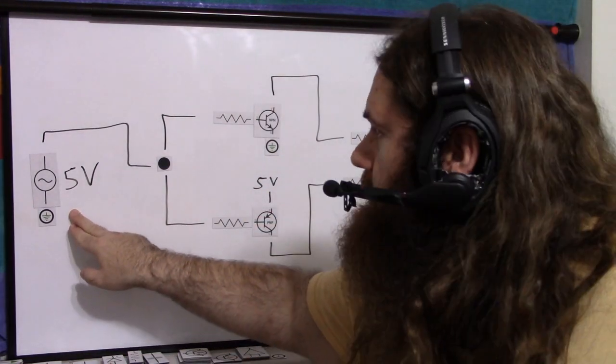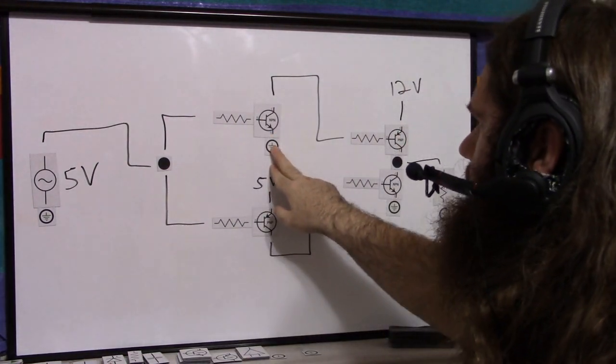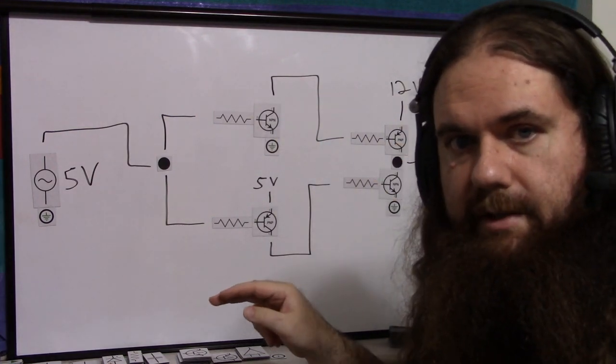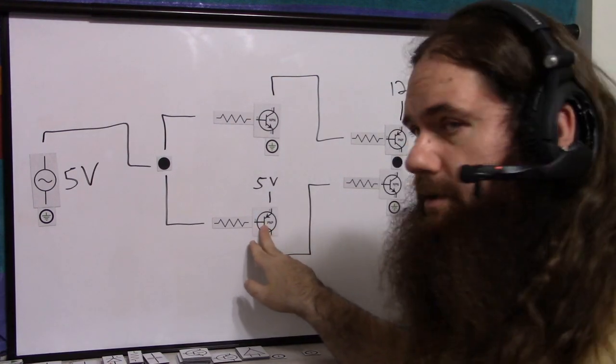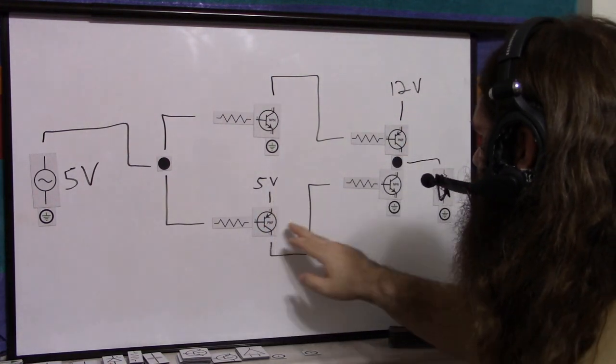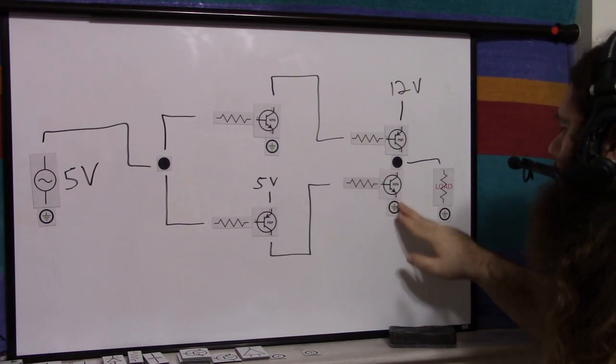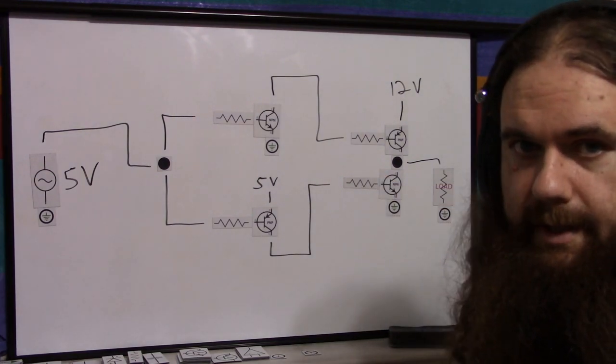When the square wave is low, the NPN has got 0 to 0, so the NPN is closed. The PNP is getting no base current, and it's closed. Square wave low here, 5 volts to 0 volts turns on the PNP, which lets high through to the base of the NPN, which turns that on, and lets the load in.